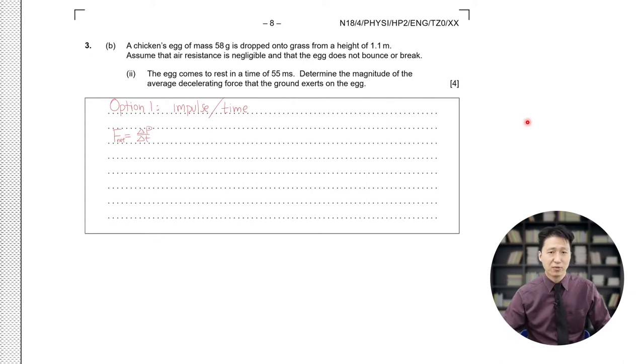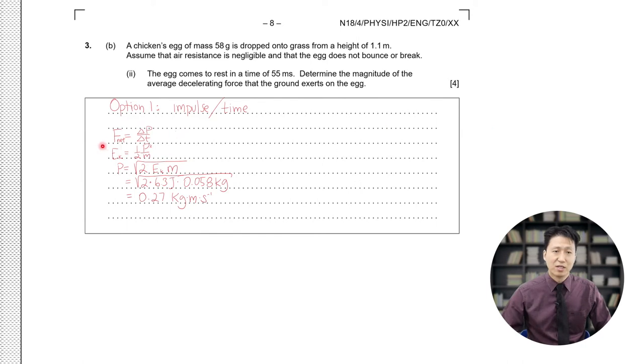We still do not know the impulse because we don't know the momentum. Finding the momentum is relatively easy. We can use that the energy is equal to one-half times the momentum squared divided by the mass. This means that the momentum will be 0.27 kilograms meters per second.